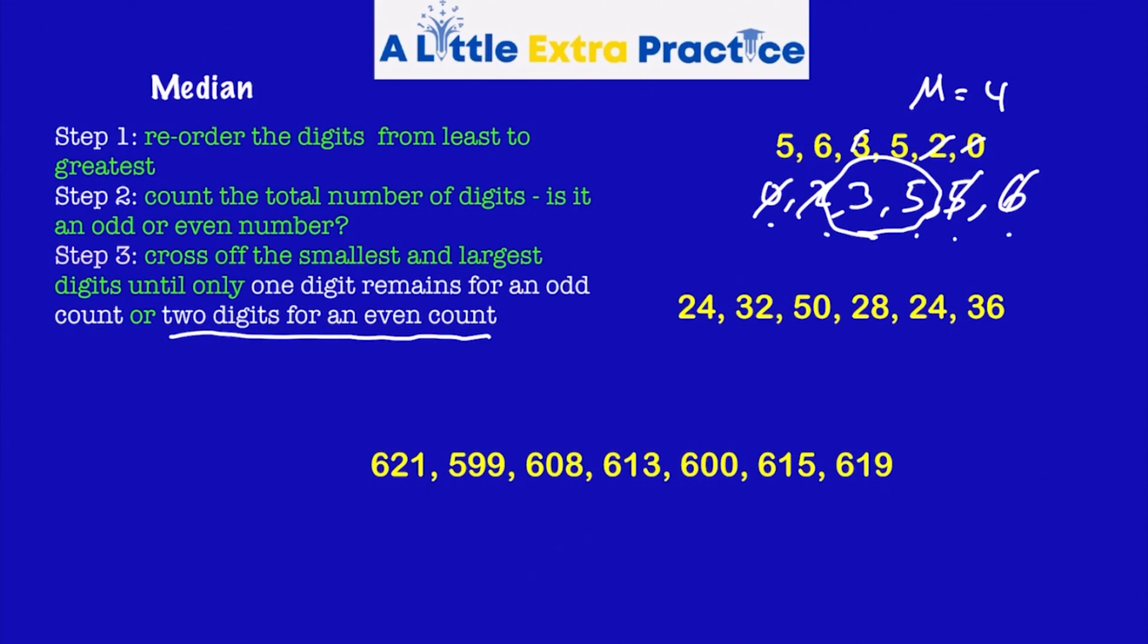Next set. Least to greatest. Let's see. Two 24s, 28, 32, 36, and finally the 50. All right. One, two, three, four, five, six. Again, least to greatest. Cross them off till two remain. What's halfway between 28 and 32? 30. So the median, I'm just labeling it M, is 30.